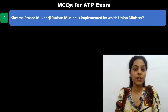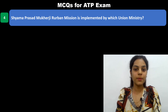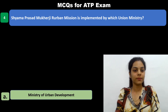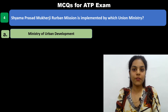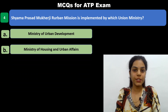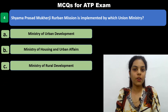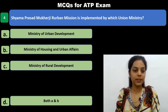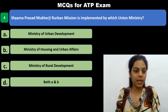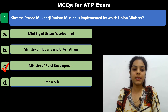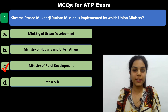The fourth MCQ: Shama Prasad Mukherjee Re-Urban Mission is implemented by which union ministry? Options are: Ministry of Urban Development; Ministry of Housing and Urban Affairs; Ministry of Rural Development; and both A and B. The answer is Ministry of Rural Development.